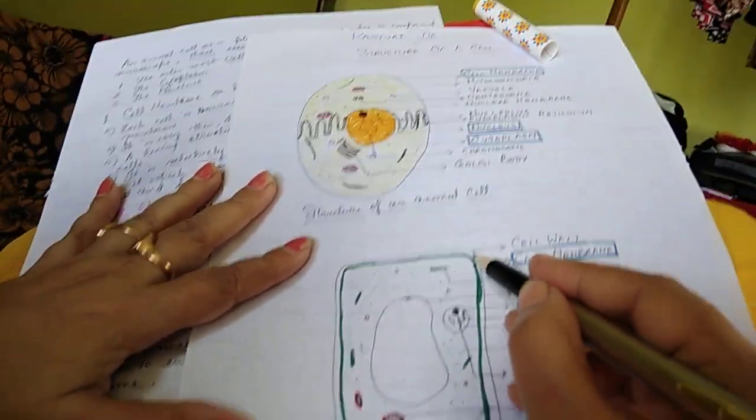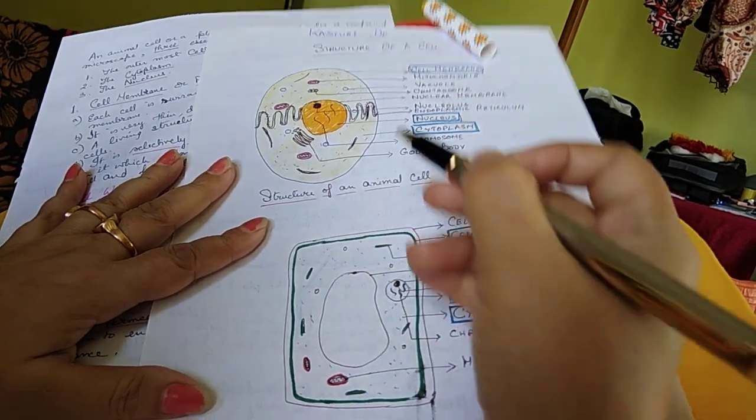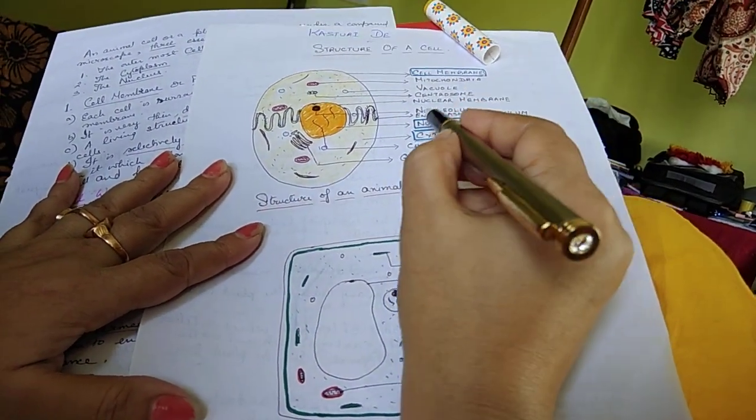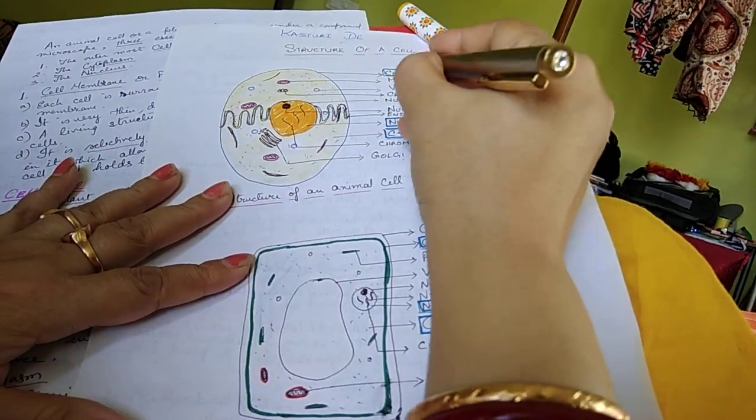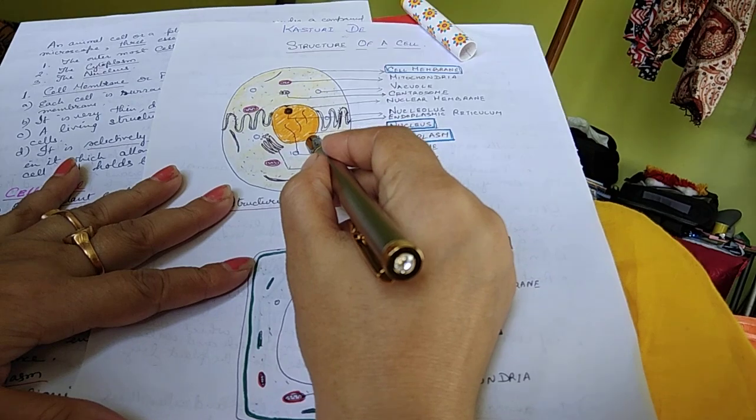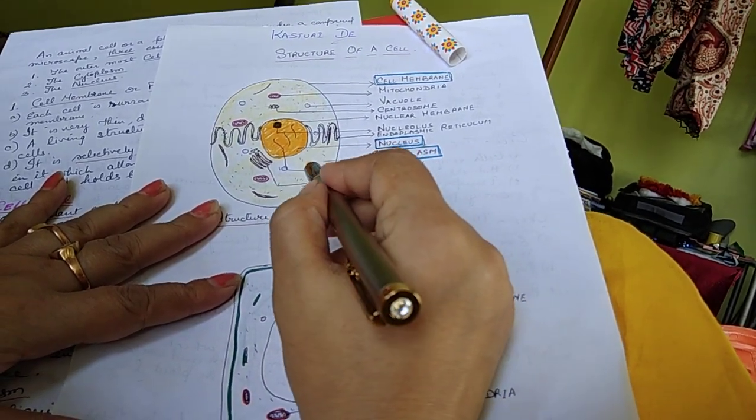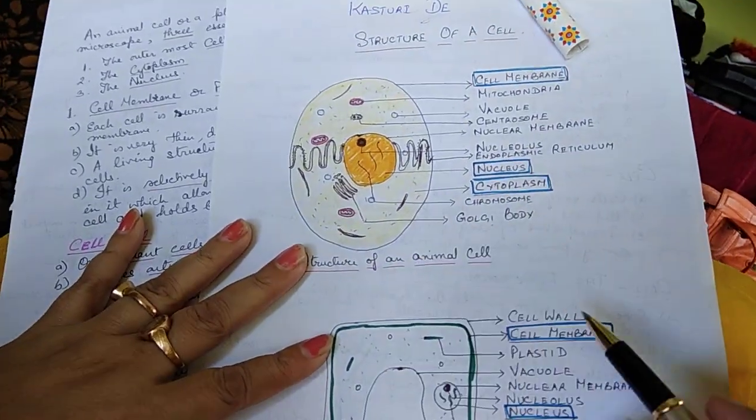And then there are three main basic parts: one is cell membrane, another is the nucleus, and between the nucleus and the cell membrane lies a jelly-like structure called the cytoplasm.